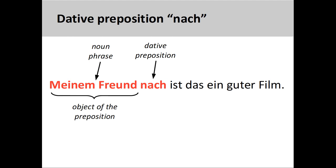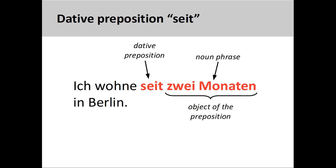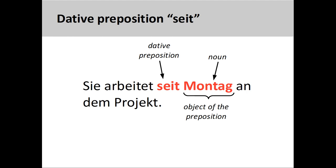The preposition seit indicates a duration of time, as in ich wohne seit zwei Monaten in Berlin — I have been living in Berlin for two months. Note that seit has a different meaning than ab, which we examined in an earlier presentation. The preposition ab indicates a point in time at which an activity starts, whereas seit indicates how long an activity has been occurring. Seit can also express when an activity was started and how long it has been going on, for example sie arbeitet seit Montag an dem Projekt — she's been working on the project since Monday.